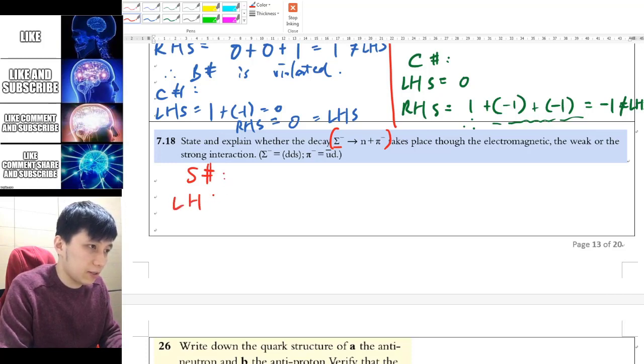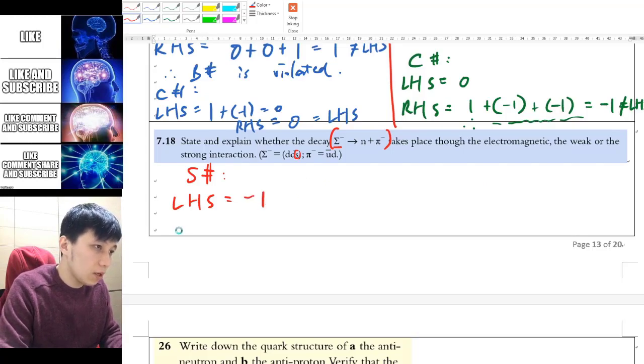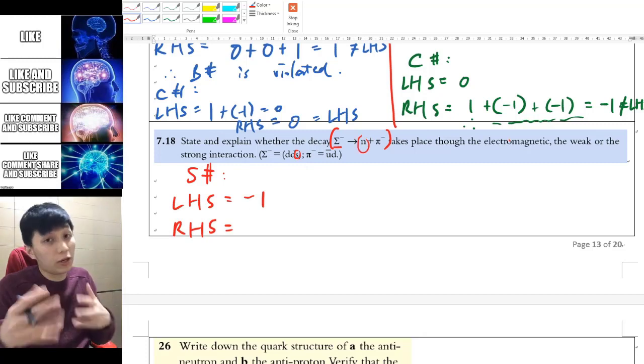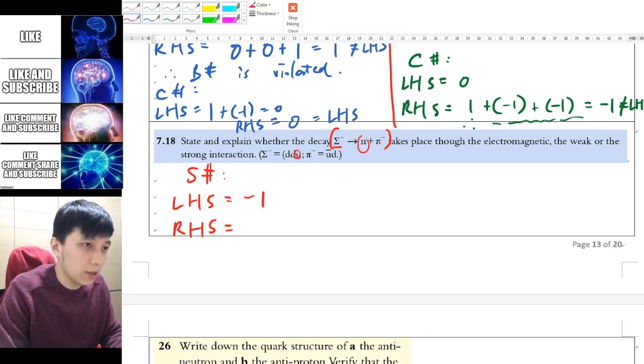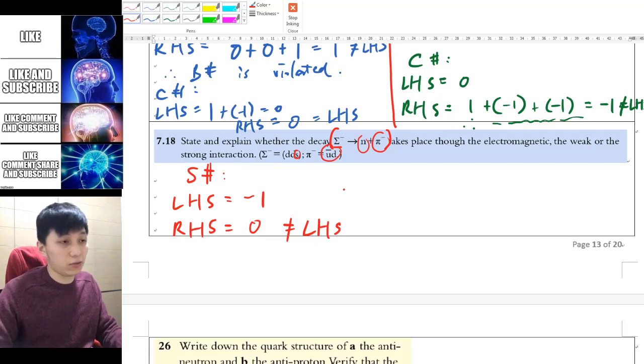So let's see. For left-hand side, we have strangeness of one sigma. And if you go back and check out your data booklet, one strangeness is negative one. On right-hand side, you have neutron, and neutron has no strange quark. You can go and check out the quark content. And for pion, as you can find from what is provided here, there's no strange quark as well. And so that will be zero for strangeness for sure. And that means it will not be the same as the left-hand side. So it's not conserved, it's violated.